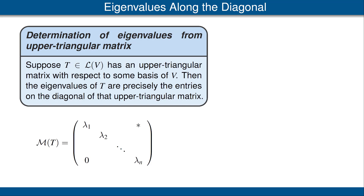Our next result tells us that if we can find a basis of V with respect to which an operator T has an upper triangular matrix, then we can find all the eigenvalues of T. Specifically, suppose T is a linear operator on V, and T has an upper triangular matrix with respect to some basis of V. Then the eigenvalues of T are precisely the entries on the diagonal of that upper triangular matrix. The matrix of T with respect to some basis is shown here as upper triangular, and according to this theorem, the eigenvalues of T are lambda 1, lambda 2, up to lambda n. For the proof of this result, please see the book.